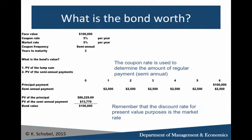To value this bond at par, I create a spreadsheet with all the important information at the top: face value, coupon rate, and market rate. Notice both rates are expressed per year in accounting. Our coupon frequency is semi-annual, so with 6 payments, we only use half the interest rate — take the market rate and divide by 2. Using the coupon rate, 5% divided by 2, we get a semi-annual payment of $2,500 every 6 months. Then we have our lump sum payment of $100,000 at the end of the 6th period — the end of 3 years.